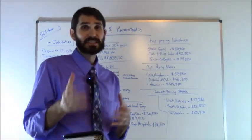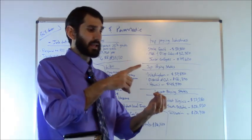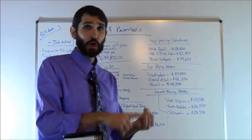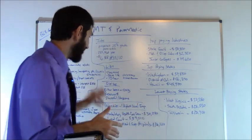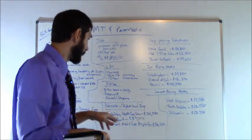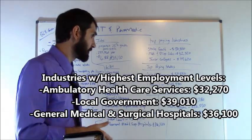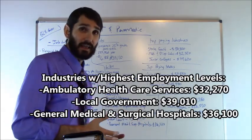The industries with the highest level of employment for EMTs or paramedics: Number one, ambulatory healthcare services came in at $32,270 average. Local governments came in at number two at $39,010 average.